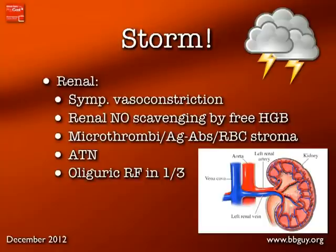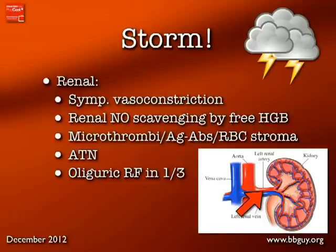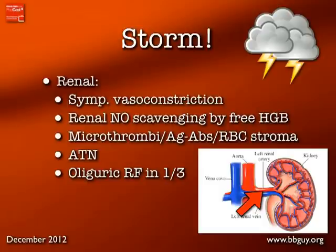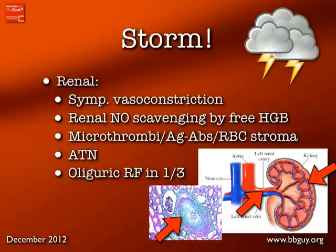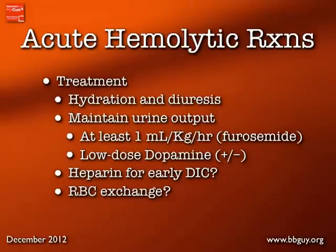Regarding renal consequences: it was previously thought that free hemoglobin simply trashed the kidneys causing acute renal failure, but it's more complicated. As a consequence of systemic hypotension, there's compensatory sympathetic vasoconstriction that somewhat selectively affects renal vessels, decreasing blood flow. Additionally, free hemoglobin scavenges nitric oxide locally in the renal vasculature, also causing vasoconstriction. Microthrombi from DIC and direct damage from free red cell stroma contribute, leading to acute tubular necrosis and oliguric renal failure in at least one-third of patients.